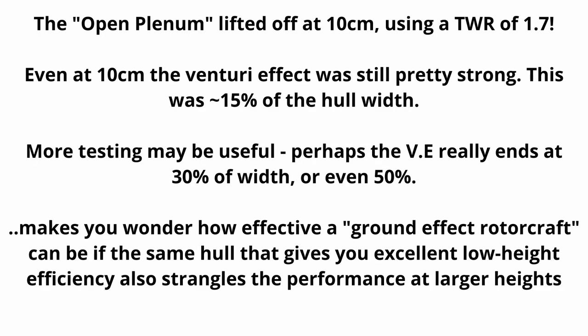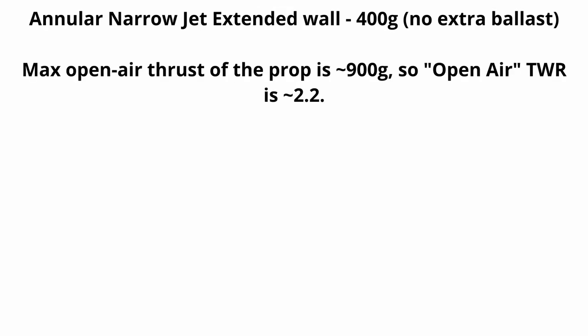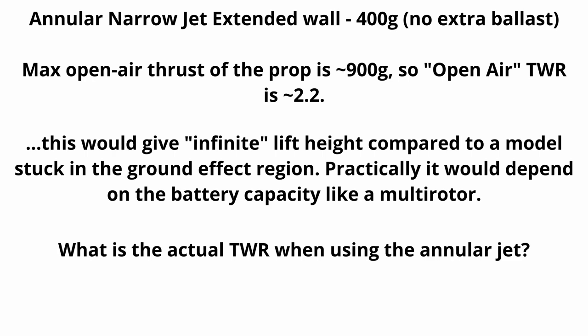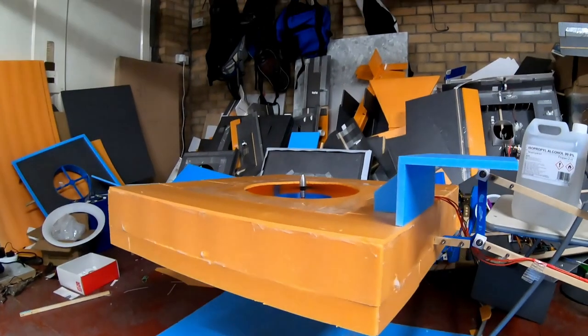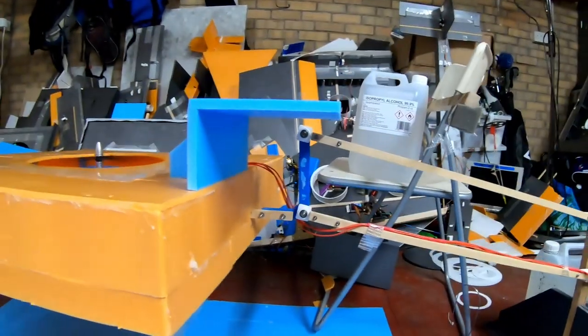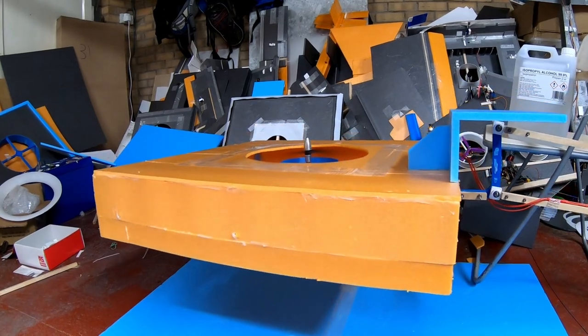Remember, it took the old open plenum a thrust to weight of about 1.7 to escape the Venturi effect. Anyway, the maximum thrust to weight going by open air thrust is a little bit over 2. Obviously a multi-rotor with a thrust to weight of 2 is just going to shoot straight up. But this thing with an equivalent open air thrust to weight of 2, it's not rising with much power. Okay, it's out of ground effect, but only just. That implies there's enough air being redirected downwards that the direct thrust is actually enough to hold it up.